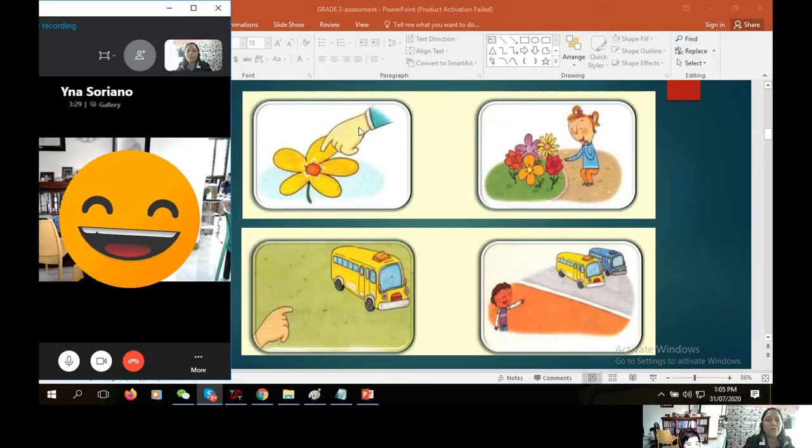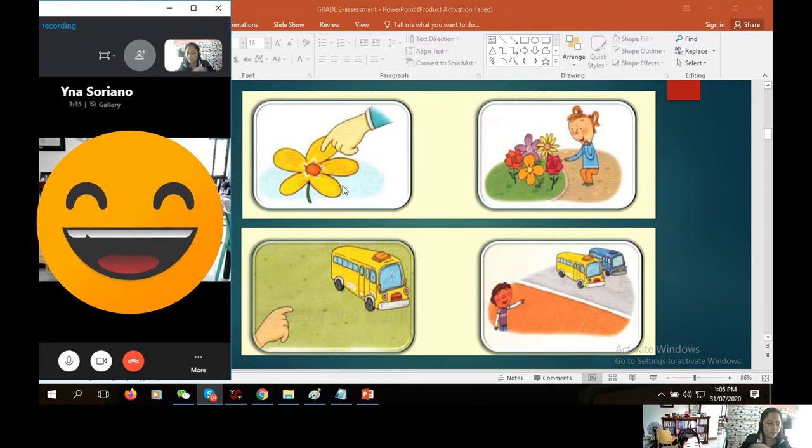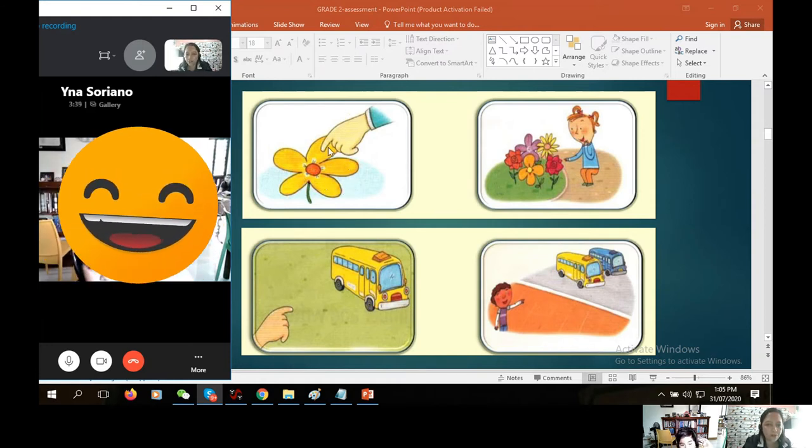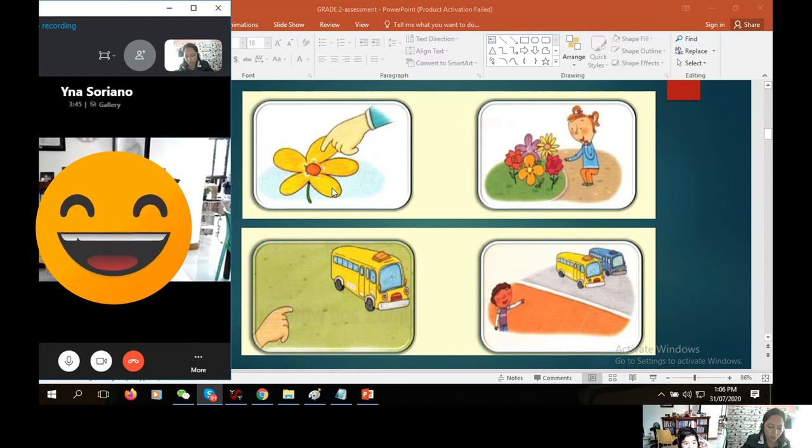Okay, let's go! Picture number one, what's this? Make a sentence. Those are flowers. Number one, picture number one. This is a flower. Wow! Good! Correct!